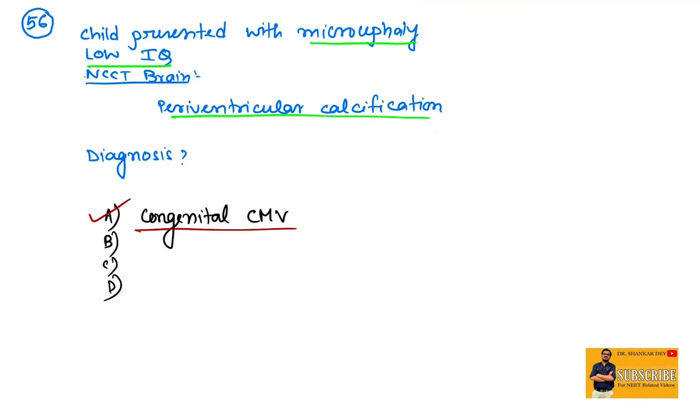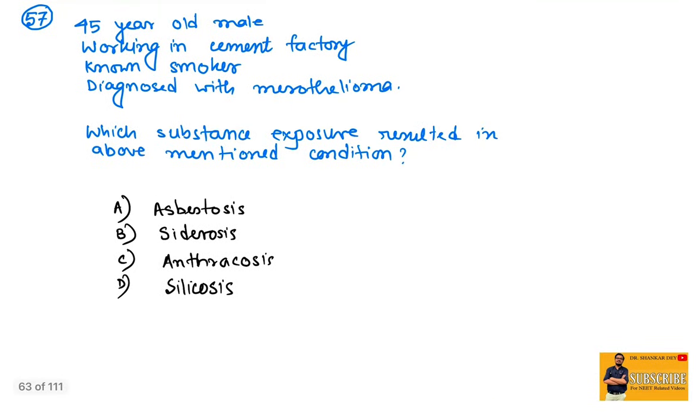Coming to question number 57: 45-year-old male working in a cement factory, a known smoker, diagnosed with mesothelioma. Which substance exposure resulted in this condition? Cement factory has chance of exposure to asbestos. Mesothelioma is the most specific cancer related to long-term exposure to asbestosis, a type of pneumoconiosis. In long-term cases, patients can develop pleural mesothelioma.